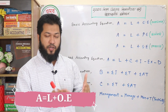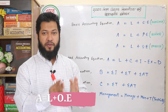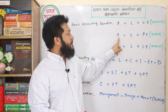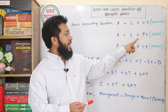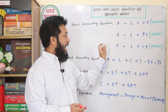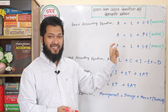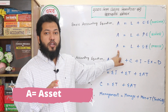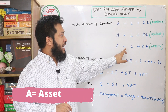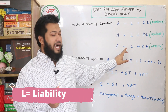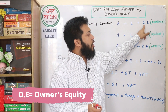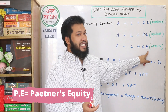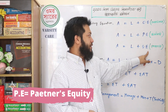If we go to the next step, we call it A equal to L plus PE. We can also call it A equal to L plus SE. A means assets, L means liability, OE means owner's equity, P means partner's equity, and SE means shareholder's equity.